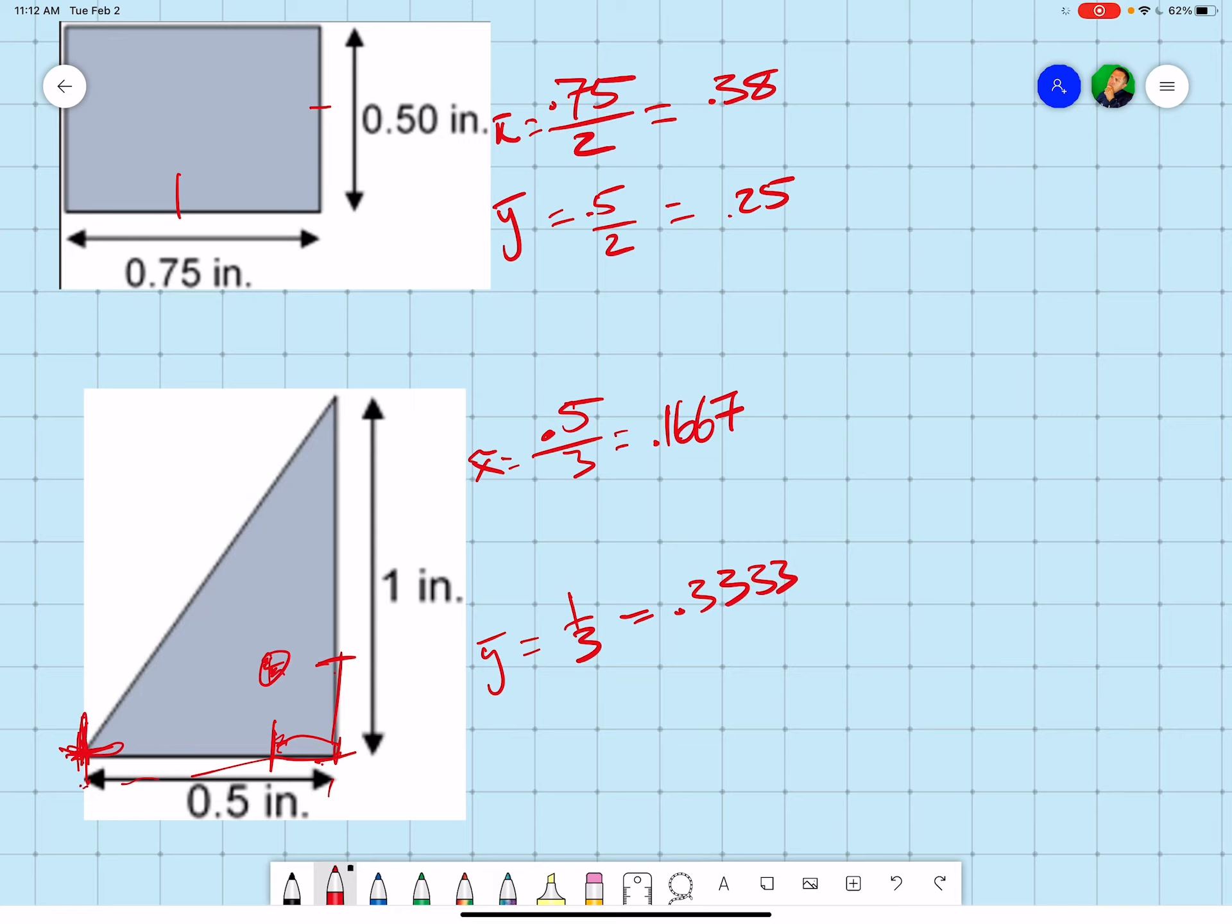So really, it would be 0.5 minus the 0.1667 and the height of 1 minus the 0.333.